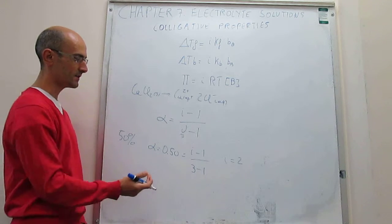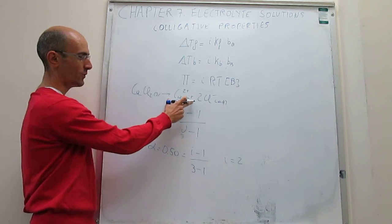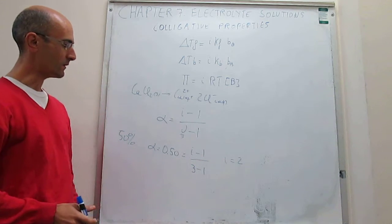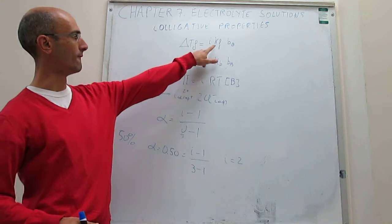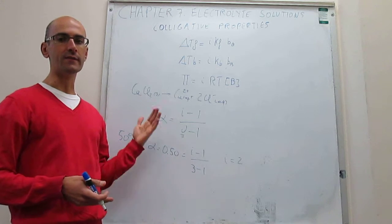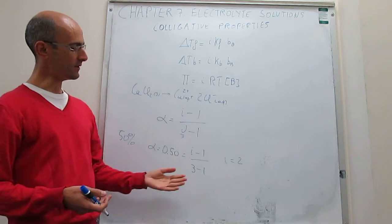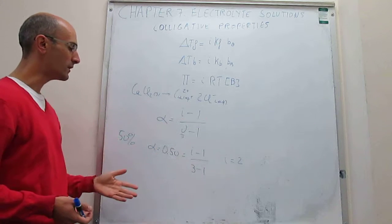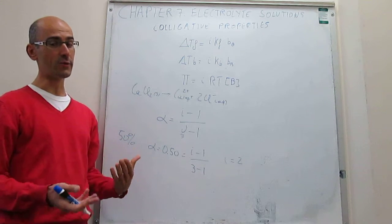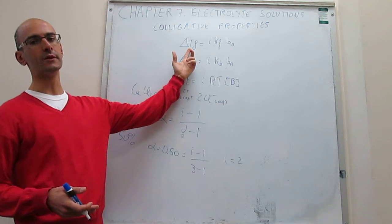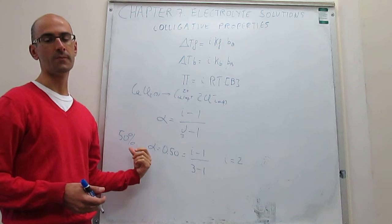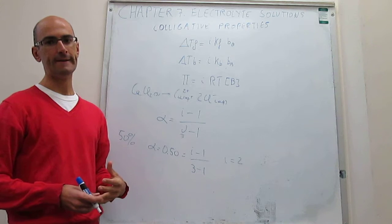This is interesting: if the salt were fully dissociated, you would expect the Van't Hoff factor to be three, but because it is only 50% dissociated, i is only two. Plugging these values into the colligative property equations gives changes to the freezing point, boiling point, and osmotic pressure that are greater than for a non-electrolyte, but not as large as for a fully dissociated salt. Importantly, by measuring the freezing point depression, boiling point elevation, or osmotic pressure, you can back-calculate the percent dissociation of a salt under given conditions of pressure, temperature, and solvent.